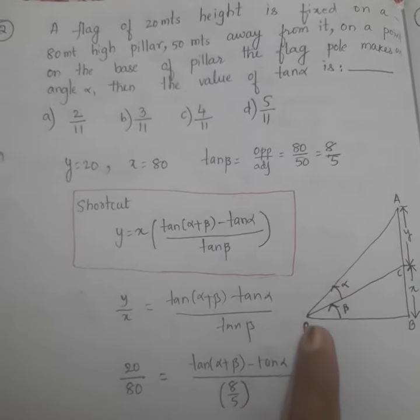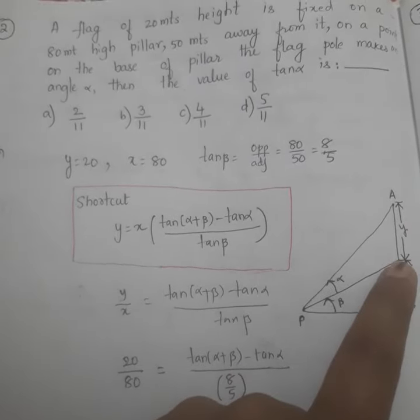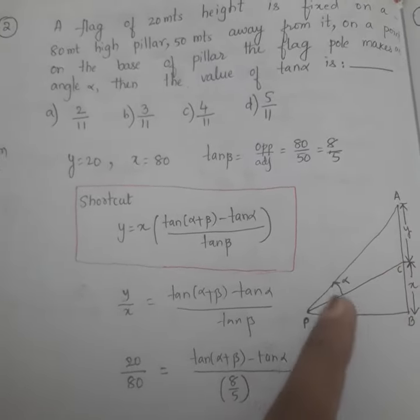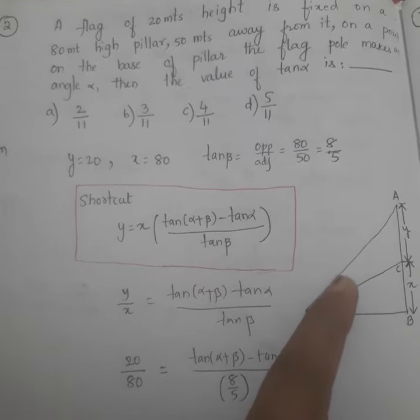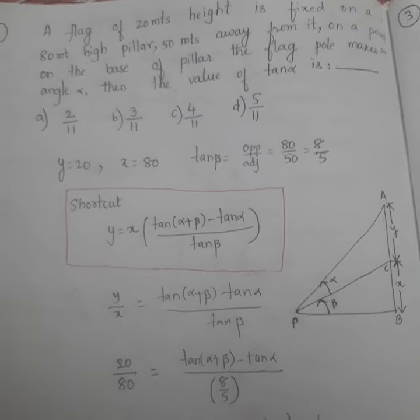Then he's asking that one person is there who's seeing the flag and seeing the pillar. So he got two angles, that is alpha and beta. Now he's asking to find tan alpha. What is the tan alpha value?